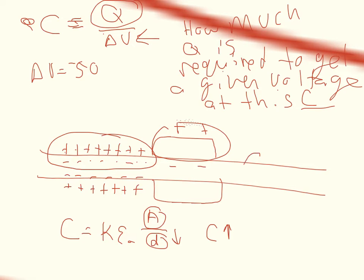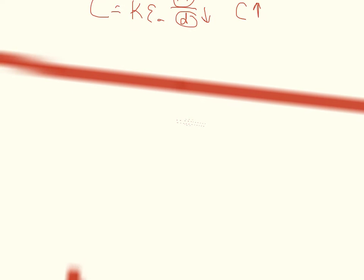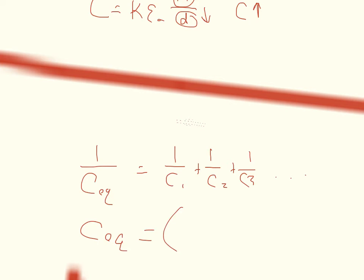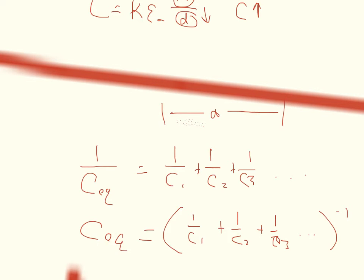Whenever the myelin sheath wraps around the first time, that's one capacitor; the second wrap is another capacitor; the third wrap is another — so we have capacitors in series. For capacitors in series, the equivalent capacitance CEQ is: 1/CEQ = 1/C1 + 1/C2 + 1/C3 ..., written as CEQ = (1/C1 + 1/C2 + 1/C3 ...)^(-1). So not only the physical distance between myelin and cytoplasm, but also this equivalent-capacitance phenomenon together both decrease the capacitance of the myelinated axon.